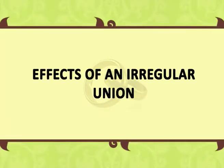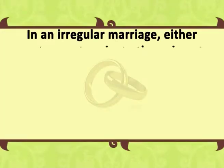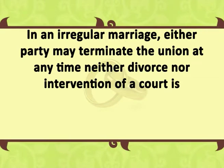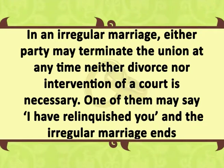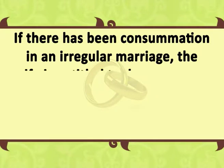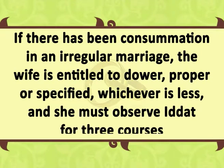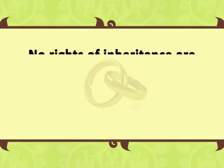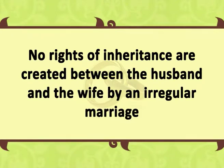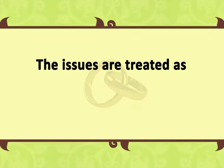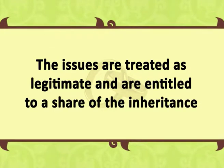Effects of an irregular union: it is very essential to learn the effects of irregular marriage on the relationship of the couple. In an irregular marriage, either party may terminate the union at any time. Neither divorce nor intervention of a court is necessary; one of them may say 'I have relinquished you' and the irregular marriage ends. If there has been consummation in an irregular marriage, the wife is entitled to dower proper or specified, whichever is less, and she must observe idat for three courses. No rights of inheritance are created between the husband and the wife by an irregular marriage. The issues are treated as legitimate and are entitled to a share of the inheritance.